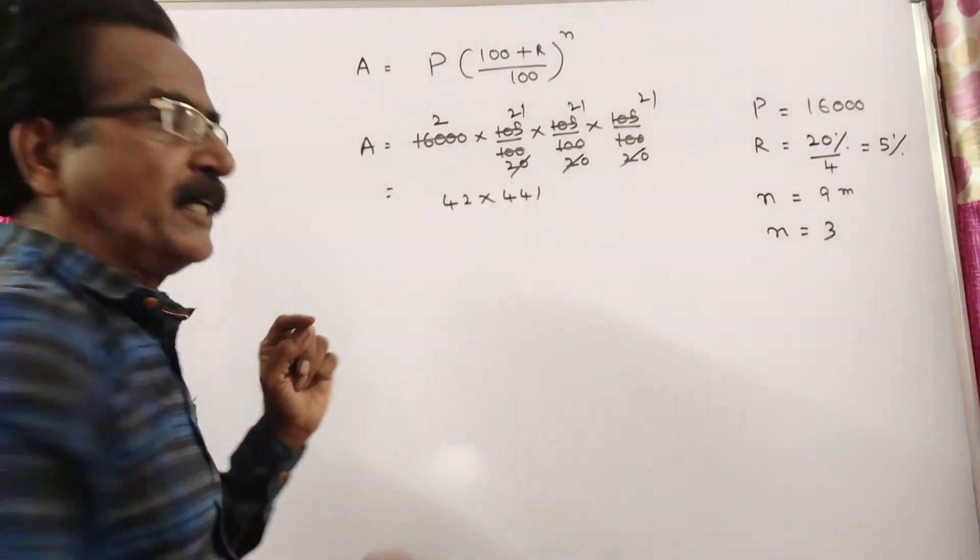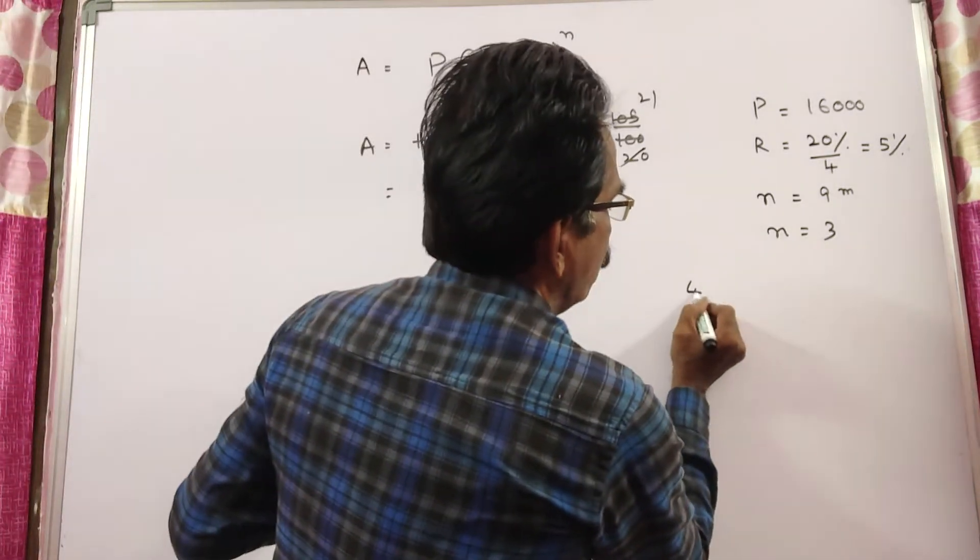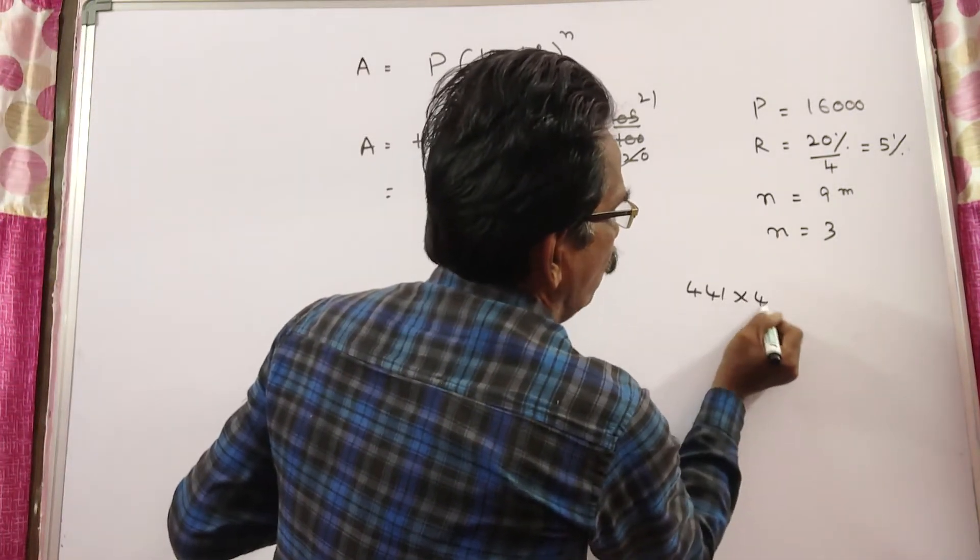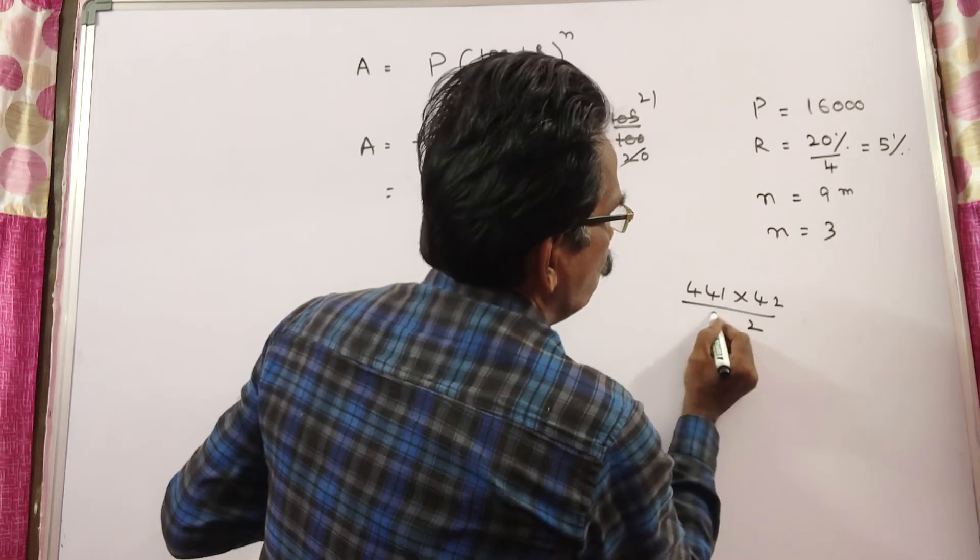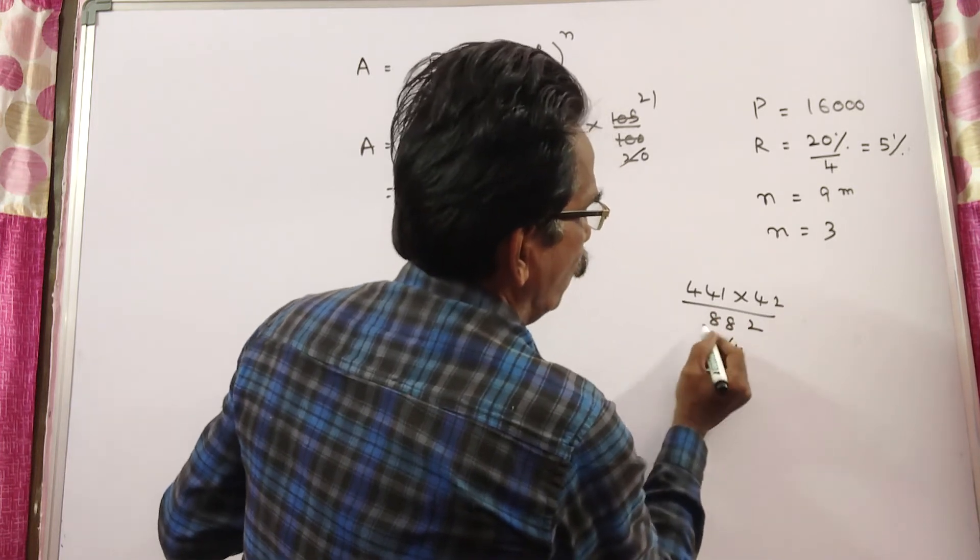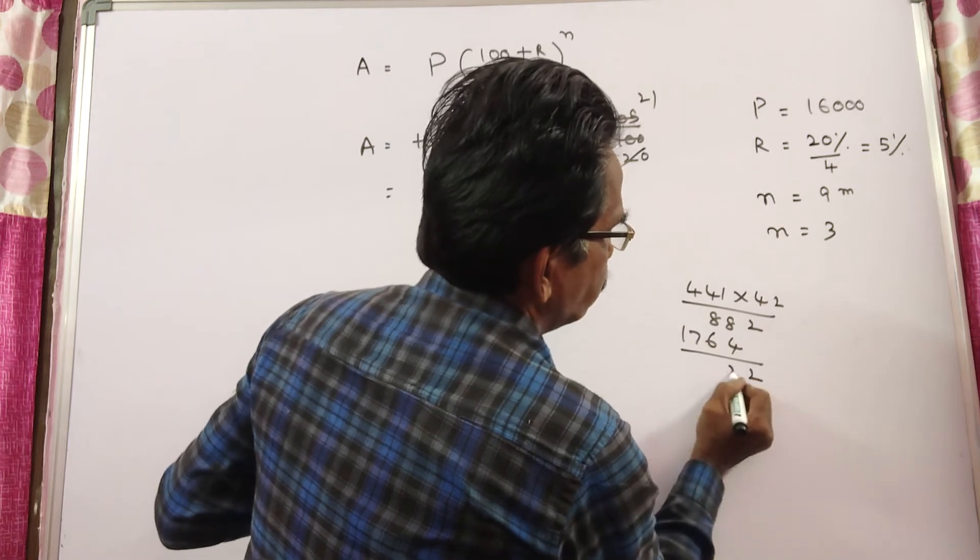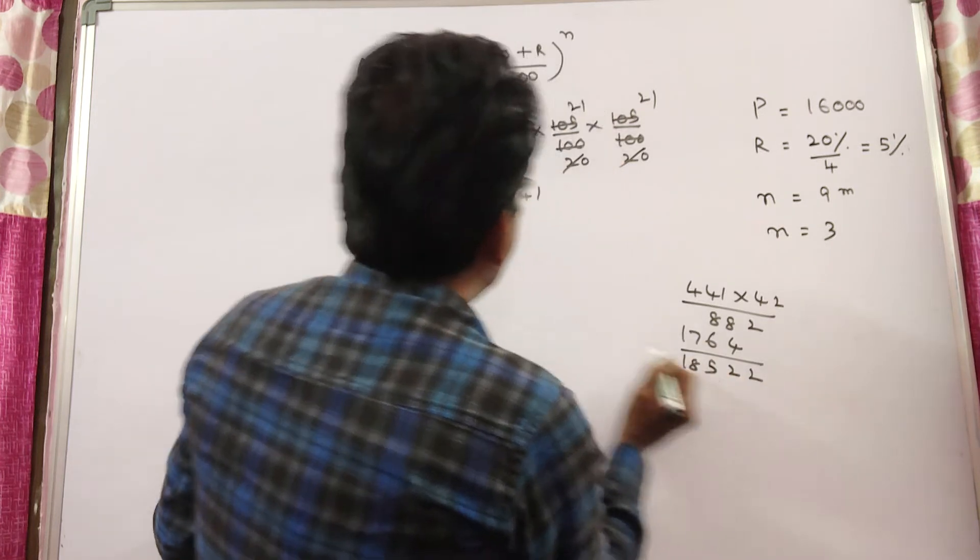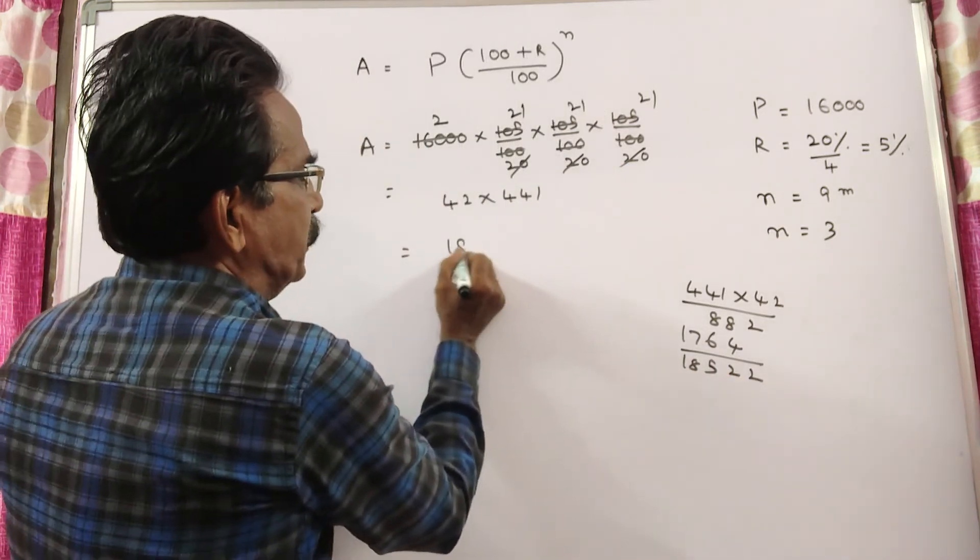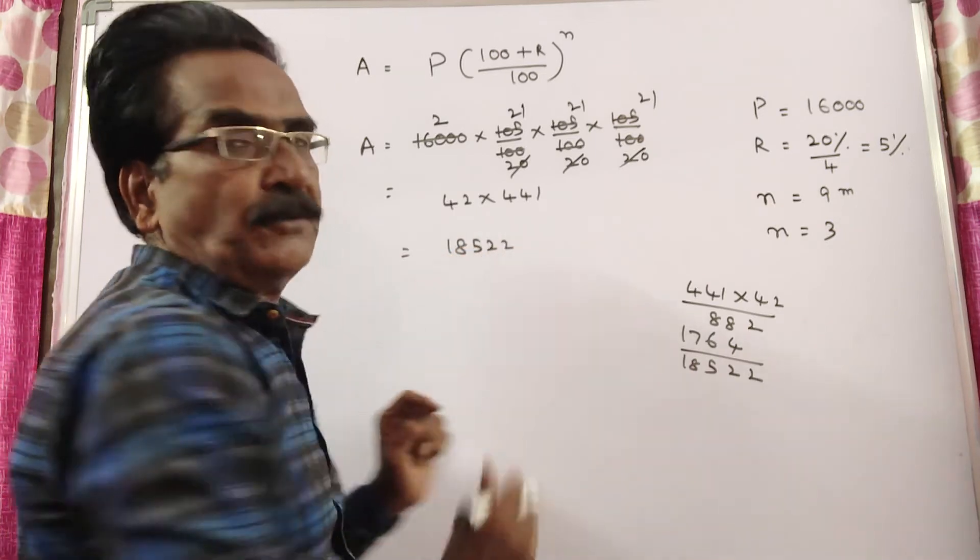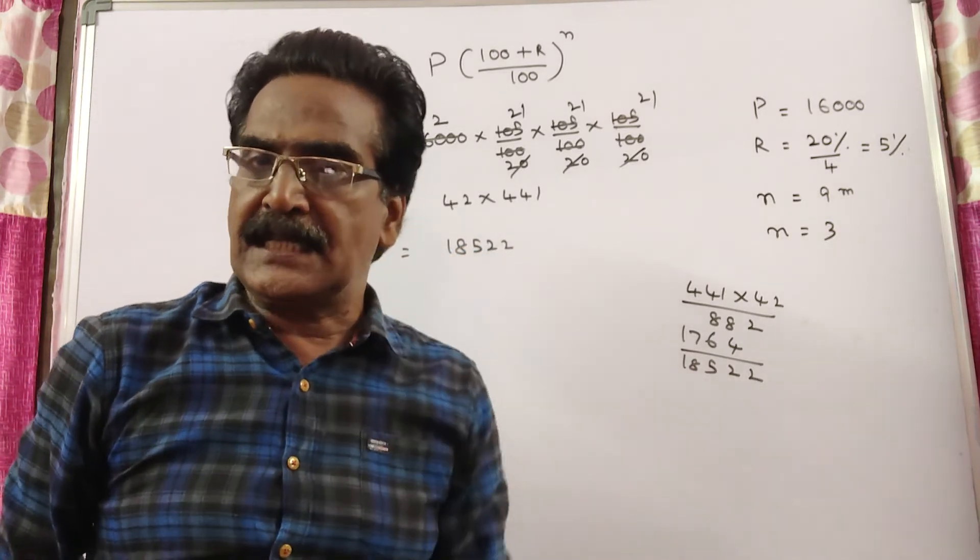Now, let us multiply 441 into 42. 2, 1's, 2. 44's, 88. 4, 1's, 4. 44's, 176. 18,522. 18,522 is the compound interest amount.